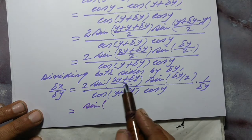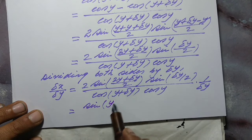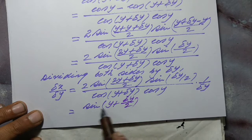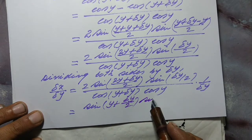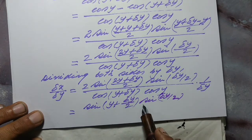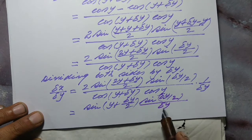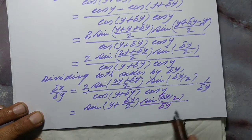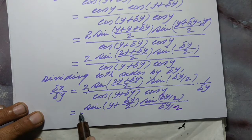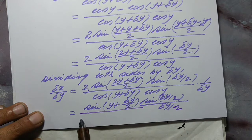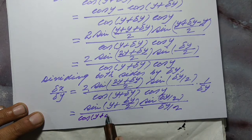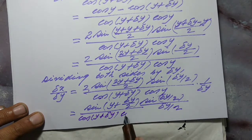Splitting this up, 2y upon 2 becomes y plus delta y upon 2, so this may be written as sin(y + delta y/2) into sin(delta y/2) upon delta y/2, with the 2 in the denominator of delta y, divided by cos(y + delta y) into cos y.